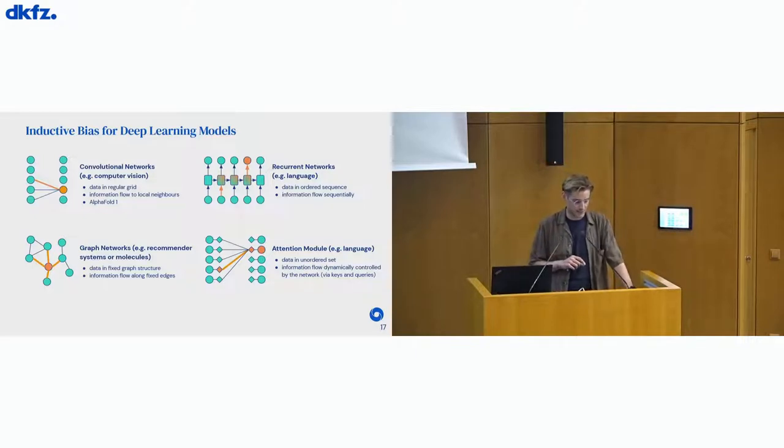And I have four examples here that bring this point home. So the first one are convolutional neural networks that are very popular in computer vision. There, the data, the image data, is structured in a regular grid. And that's the thing we're making use of in building the architecture, where in convolutions, information really flows from local neighborhoods to local neighborhoods. Then another inductive bias is the one that's used in graph neural networks, where we already know the fixed graph structure of the problem. That's, for instance, the case in recommender systems or on machine learning for small molecules, say. And we really try to, in these kind of cases, bake in the fixed graph structure of the problem. And information in that type of architecture can flow along these fixed edges.